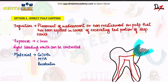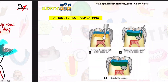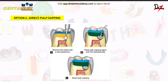To summarize, this is how DPC is done: first you remove the caries with a burr; in this case the pulp gets exposed because the caries was very near to the pulp; then you place the medicament on the exposed pulp — and that is what we call direct pulp capping.